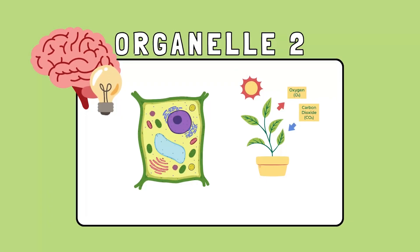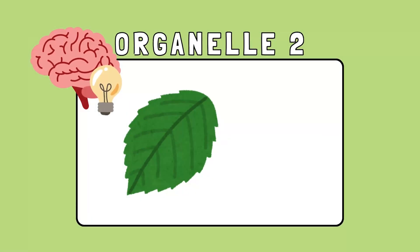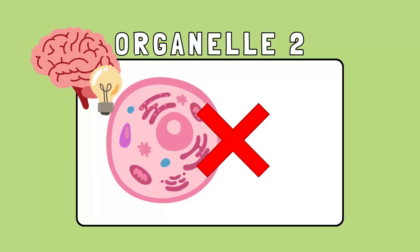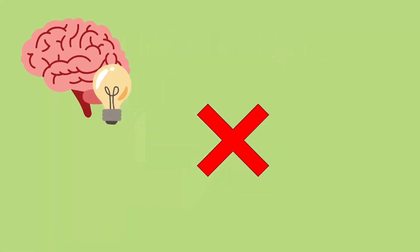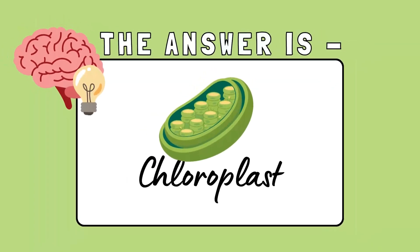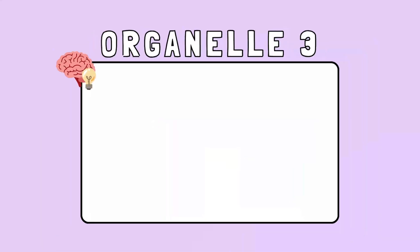This organelle is found only in plant cells and performs photosynthesis. It contains chlorophyll, which gives plants their green color, and it is absent in animal cells. The answer is chloroplast — the reason plants can create their own food using sunlight, water, and carbon dioxide.